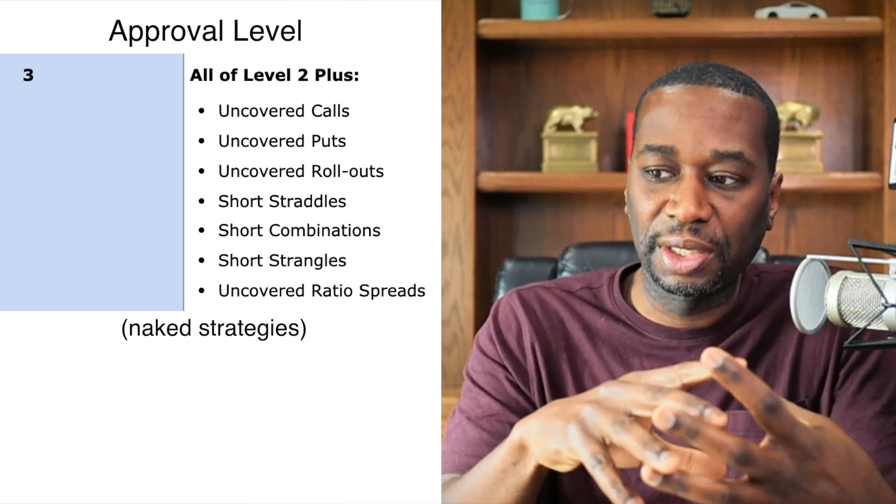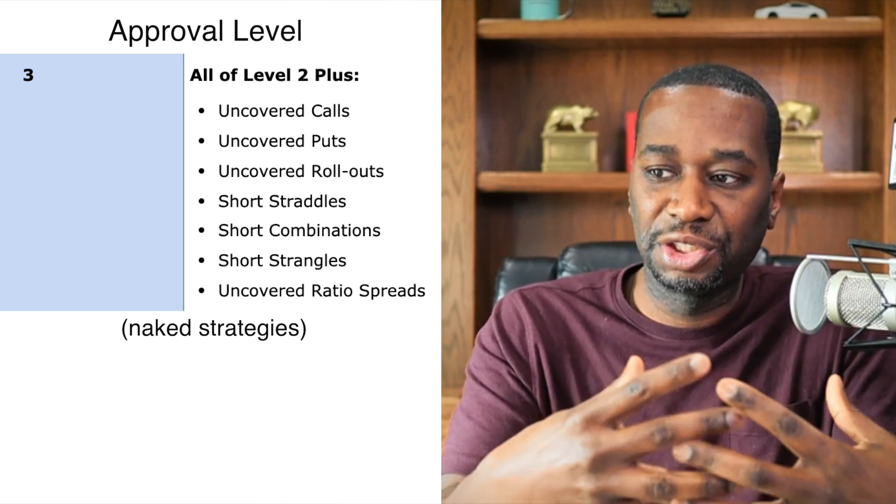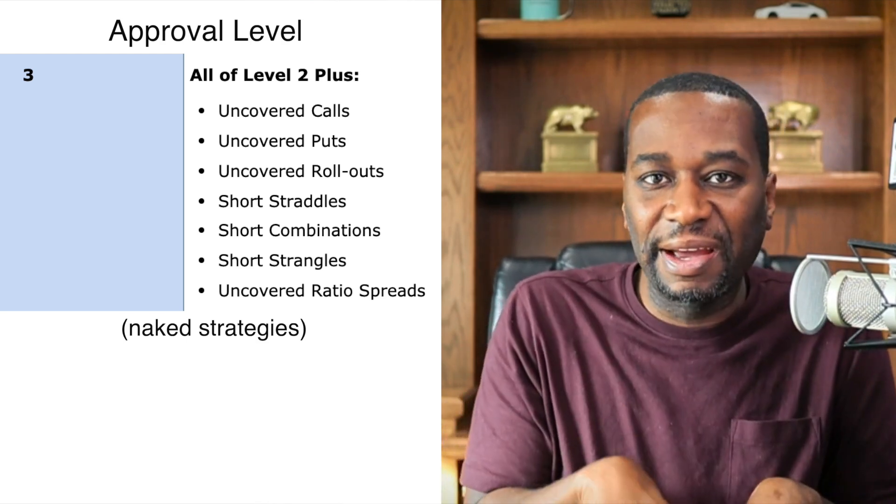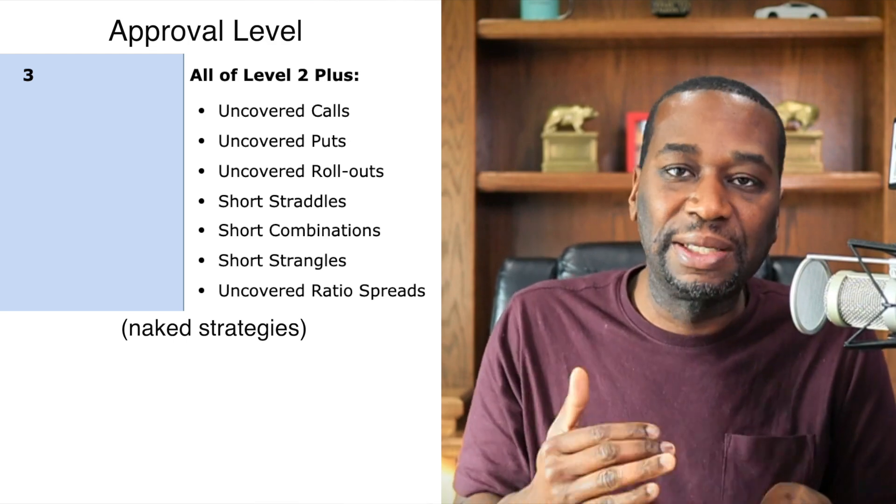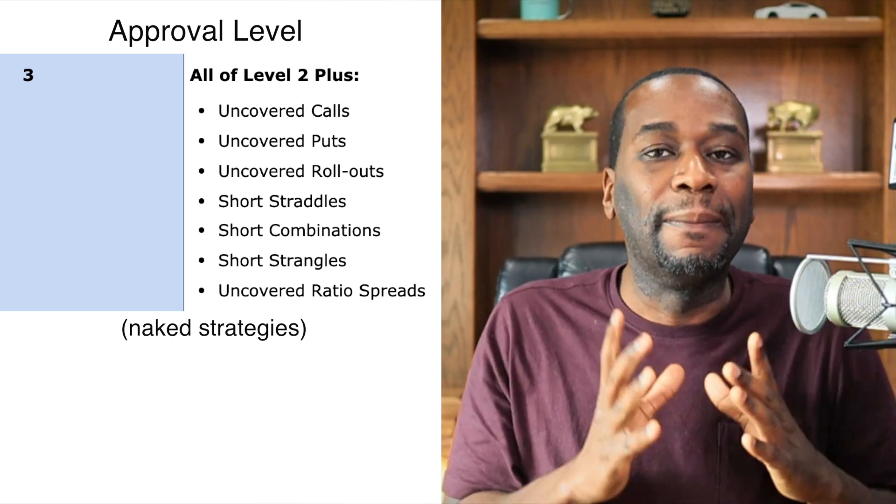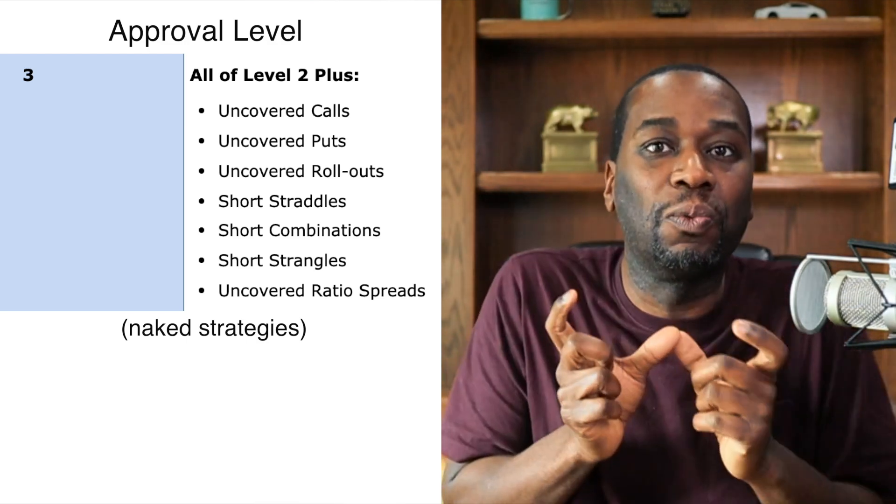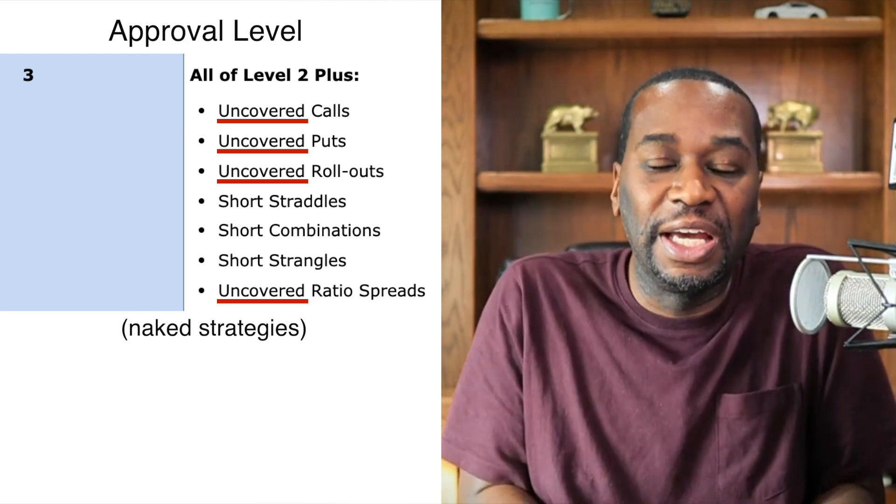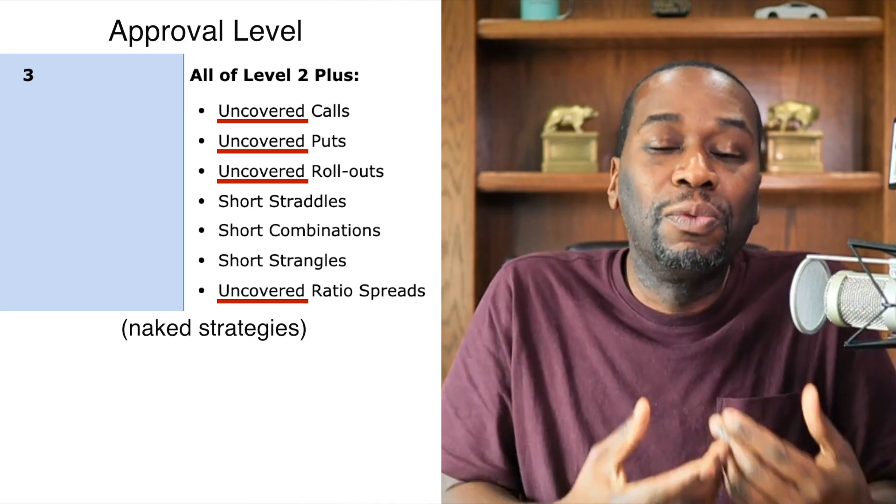But just look at level three: you get to do uncovered calls, uncovered puts, uncovered rollouts, short strategies, short straddles, that's to say short combinations, short strangles, and uncovered ratio spreads. Notice everything in there is similar to what we've covered in level zero, one, and two.